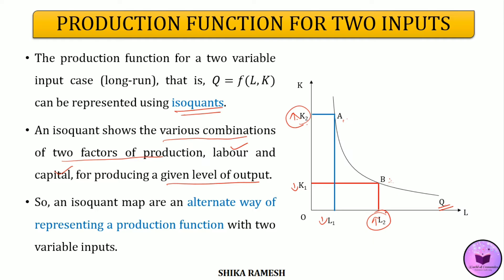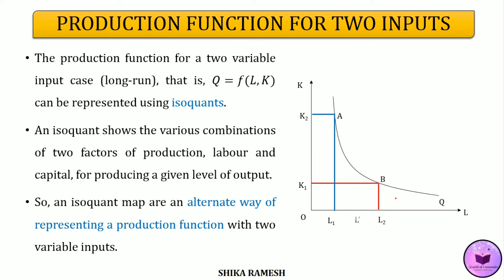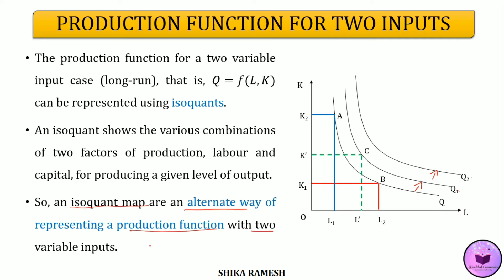The decision of the firm whether to choose combination A or B is purely dependent upon the factor prices of labour and capital. If wages are greater than the price of capital, the firm will use more units of capital and fewer units of labour. When both capital and labour inputs are increased, output also increases, represented by an upward shift in the isoquant from Q to Q1, denoted by point C. Each isoquant represents varying proportions of labour and capital to produce a particular level of output. A set of isoquants is known as an isoquant map, which represents the production function of a firm when inputs are varying.